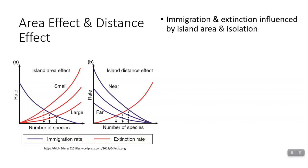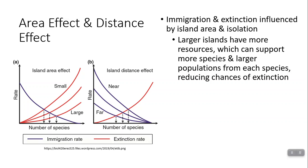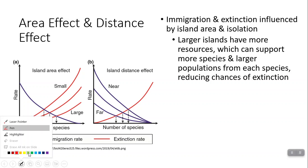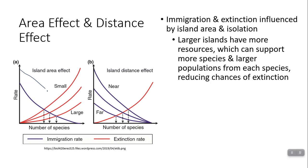There are a couple of other things that can affect immigration rates and extinction rates. The area or size of the island is a big deal. A large island tends to have larger resources, which means it can support more species. The rate of extinction is also higher for a small island because there are fewer resources, so there's more competition and more likelihood of organisms out-competing each other. Larger islands have more resources. For the island area effect, immigration rate will probably be higher too, because a large target is easier to hit.